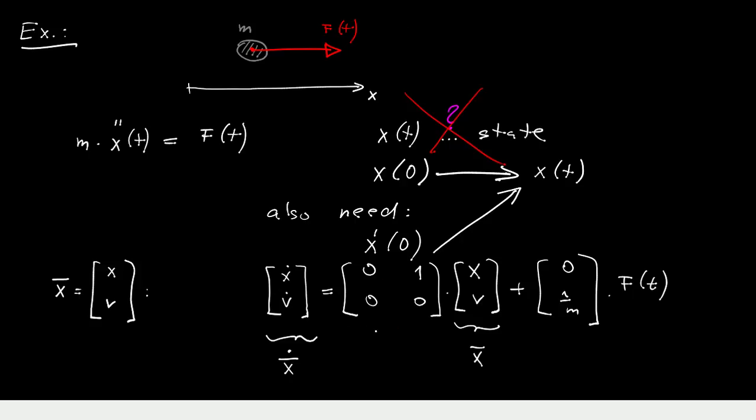Now this is our state matrix A, this is our input matrix B, and this, if you want to relabel it to be consistent with our standard notation, you can view this as U as the input.